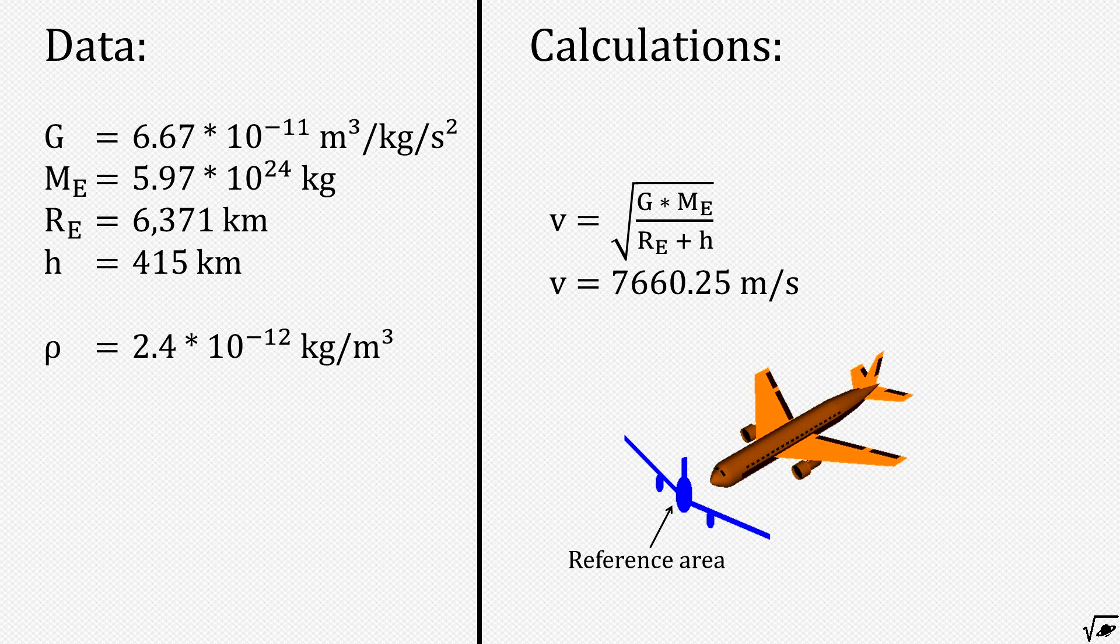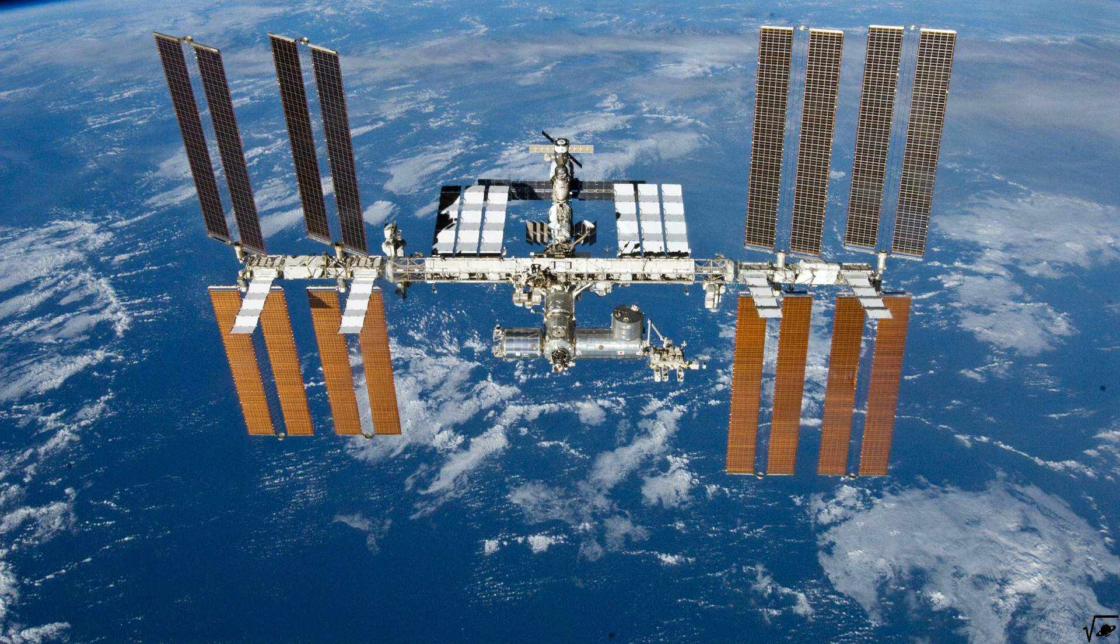Also the reference area, which is basically the size of the hitbox of the ISS, is quite variable. Especially the orientation of the large solar panels can make a significant difference in aerodynamics.